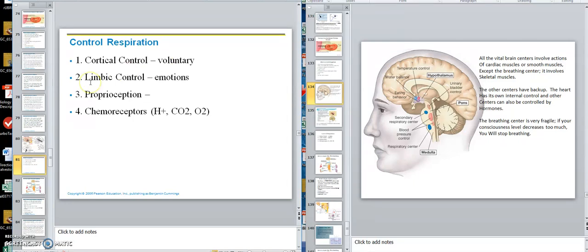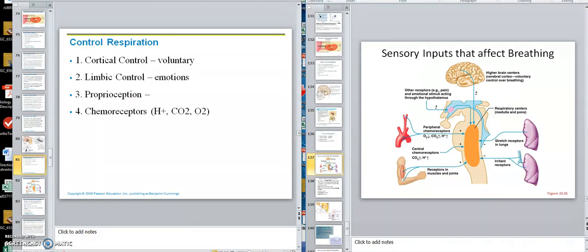Limbic. Your limbic system, which can consist of the amygdala, hippocampus, caudate nucleus, things of that nature, that's your pain and pleasure center. That's your emotion area in the brain. You know emotions can make you change your breathing.